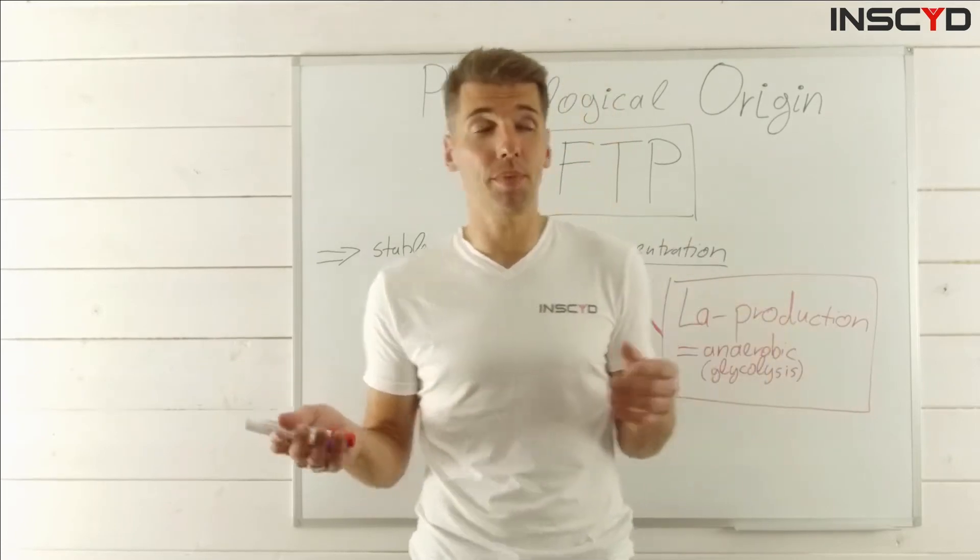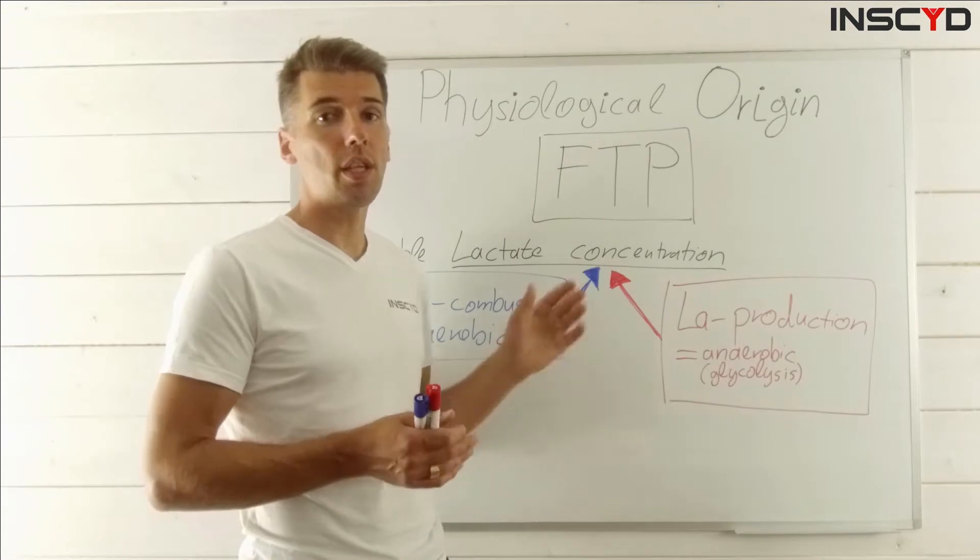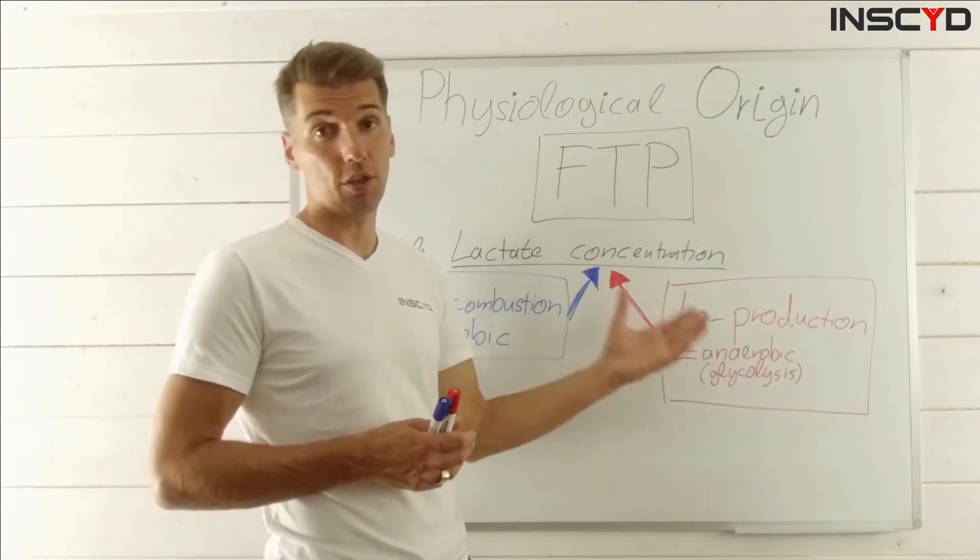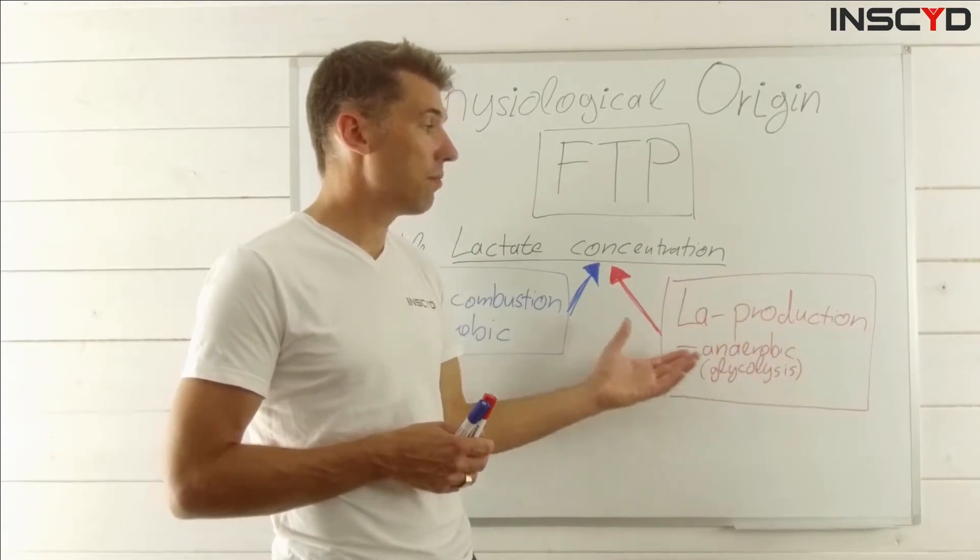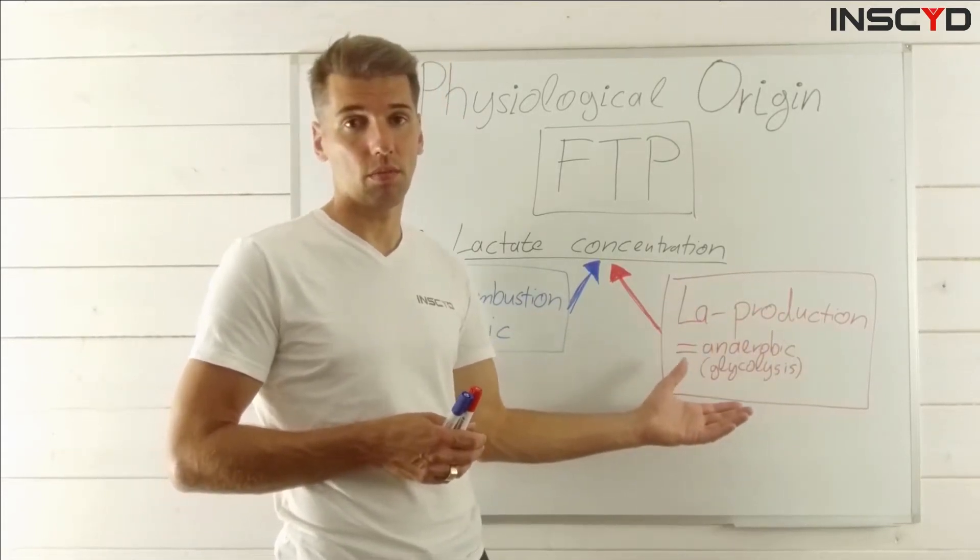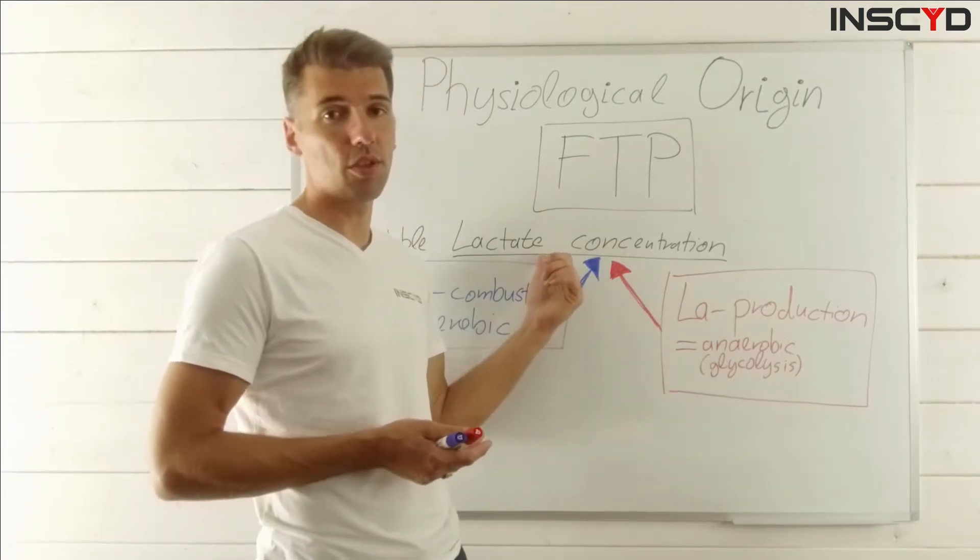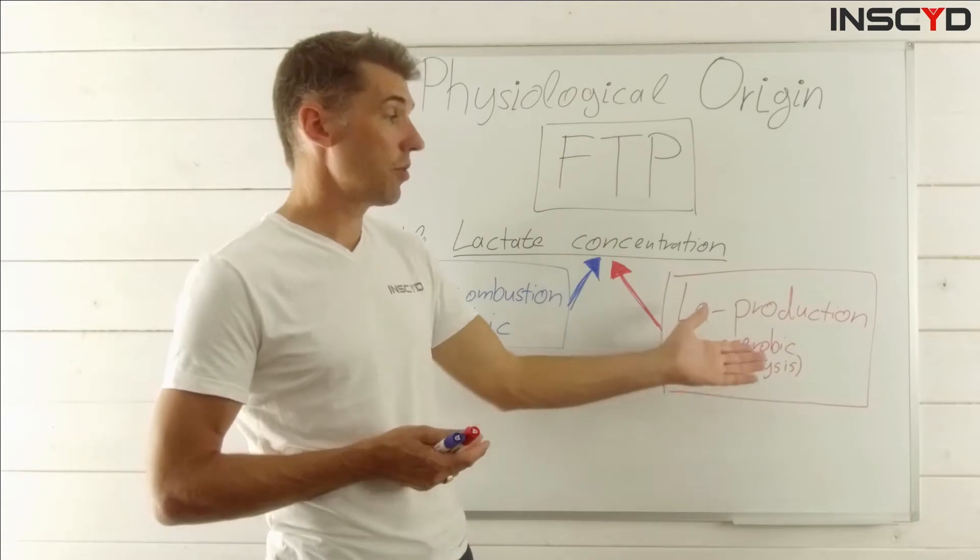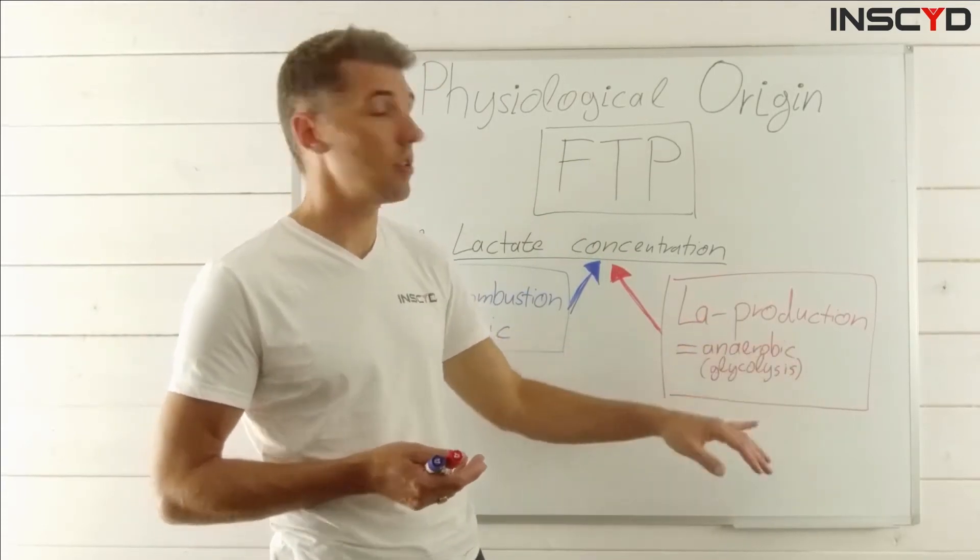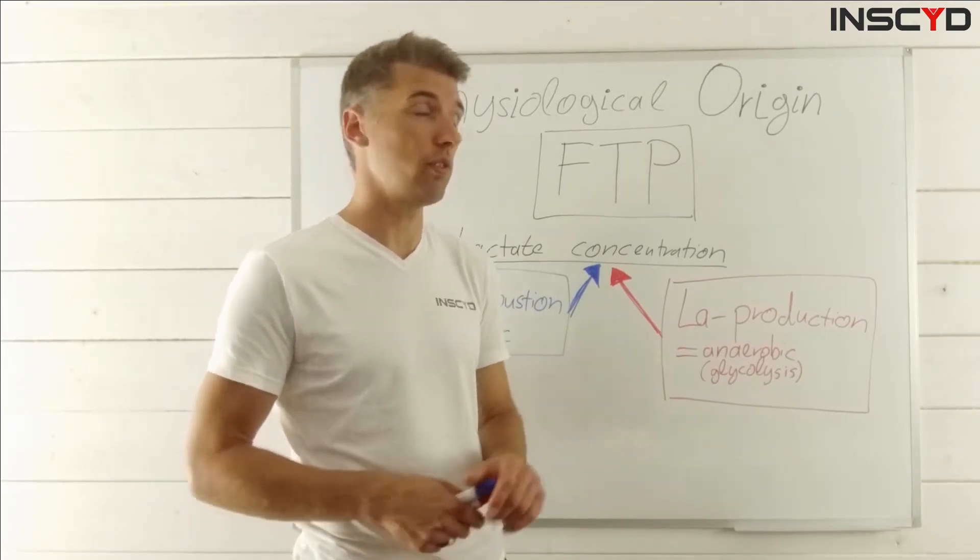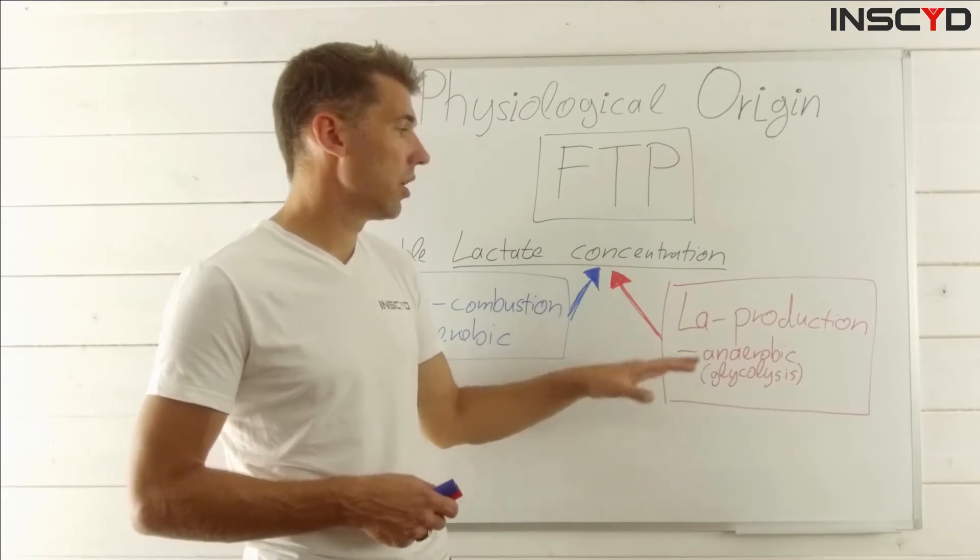That's pretty simple. The lactate concentration that you can see in the blood, that you can actually measure, is derived or based on a certain lactate production. That should be pretty intuitive to understand - if you measure a concentration of lactate in the blood and maybe it goes up, there has to be a production of lactate. This is happening in anaerobic metabolism, which is more precisely the glycolysis.